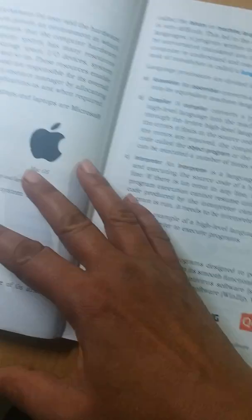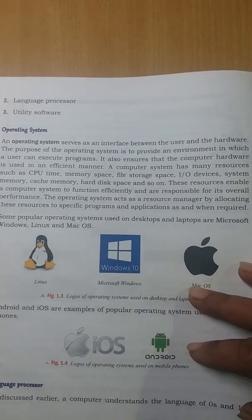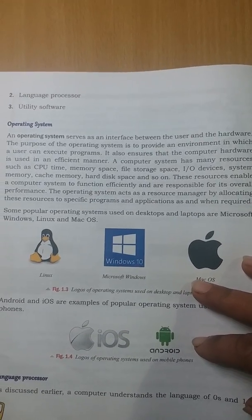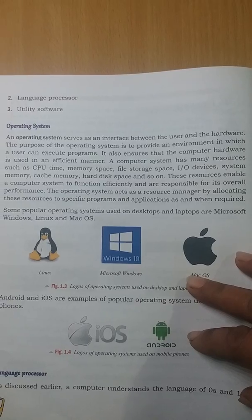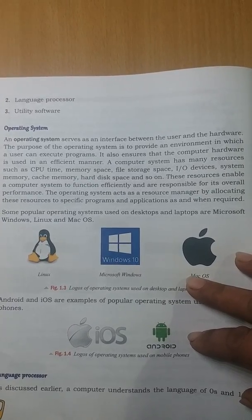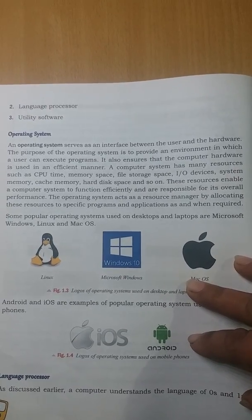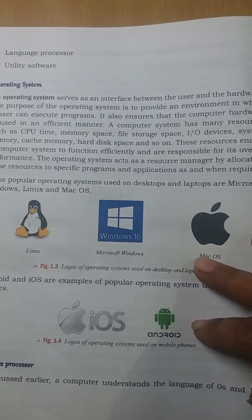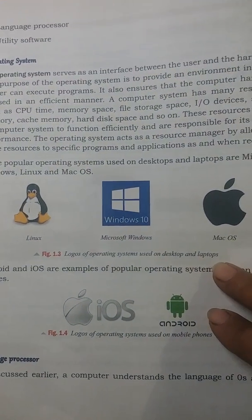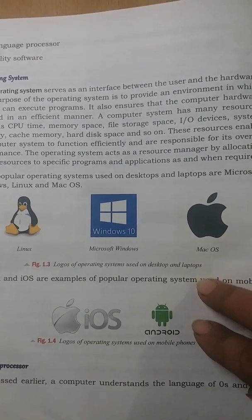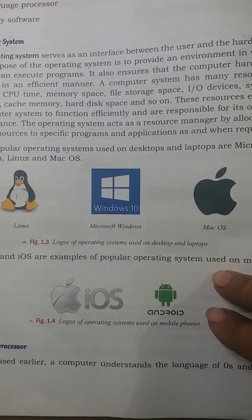The very first type of system software is the operating system. The operating system is considered as the interface between the user and the hardware. It manages the overall operation of the computer system — the memory unit, input/output devices, CPU time, hard disk space, and resource availability. Some common operating systems are Linux, Microsoft Windows, Mac OS, Apple iOS, and Android, which is used in your mobile phones.